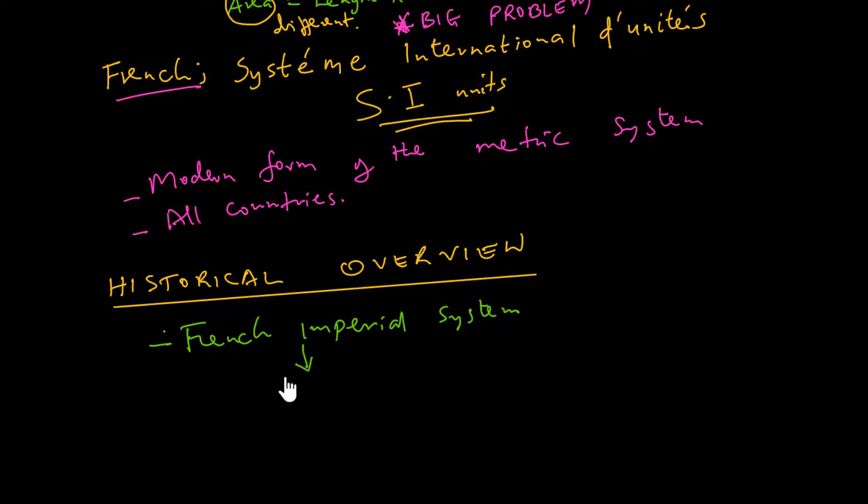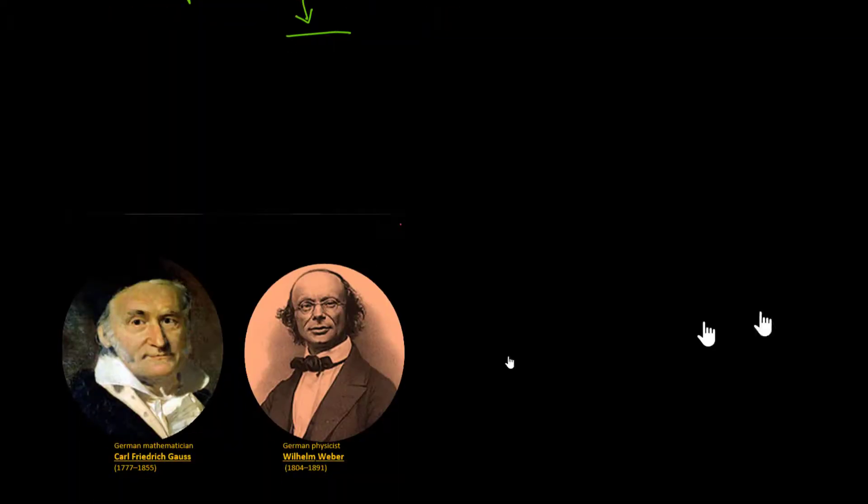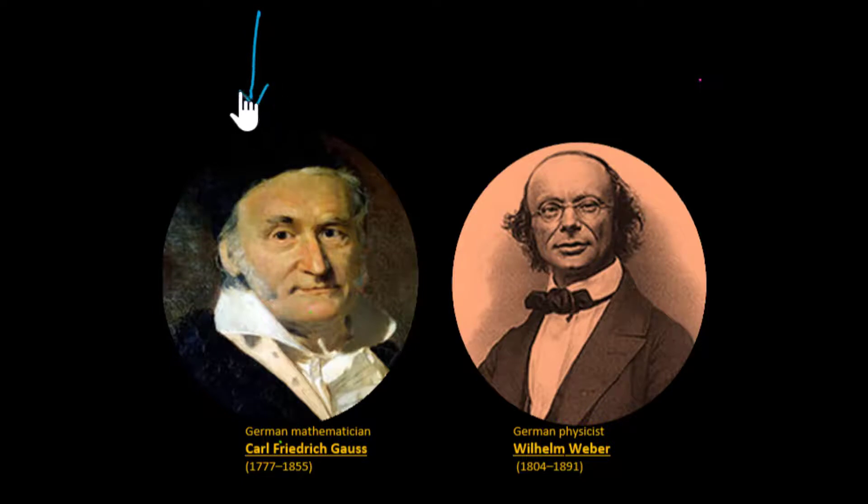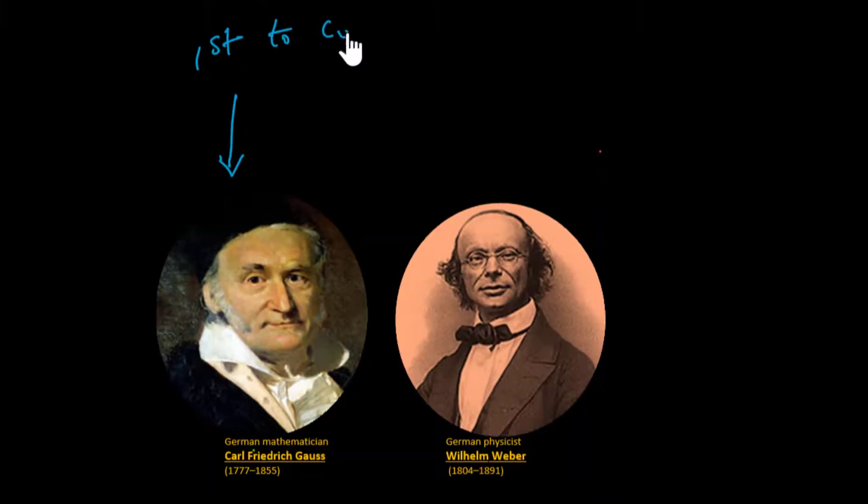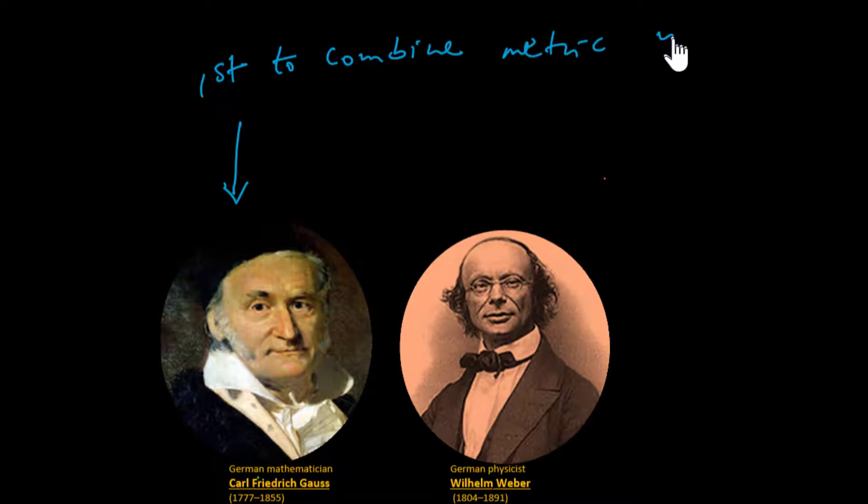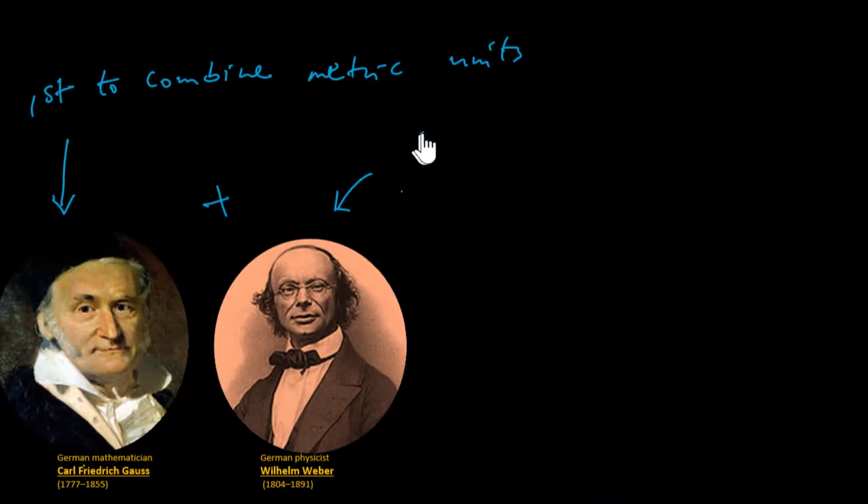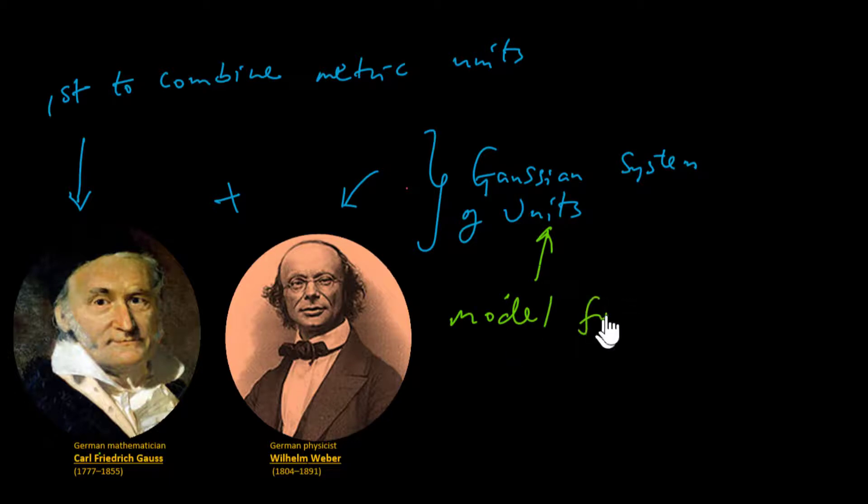Before then, the great German mathematician Carl Friedrich Gauss was the first to promote the idea of combining metric units to form a complete and consistent unit system for mechanics. Gauss, with the help of the German physicist Wilhelm Weber, managed to extend the concept to include the units for electricity and magnetism. Their units gave rise to the Gaussian system of units. The organization of the Gaussian system of units served as a model for the international system.